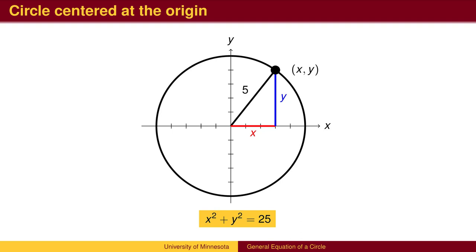In this example, x squared plus y squared equals 5 squared, which is 25.